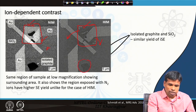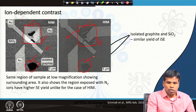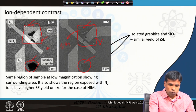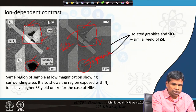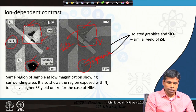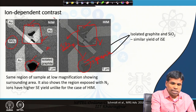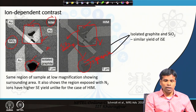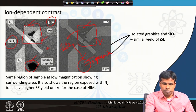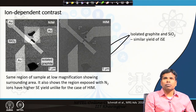The isolated graphite contrast for nitrogen ions is significantly different from that in the helium ion microscope. SiO2 contrast and graphite contrast are significantly different in nitrogen ion microscopy, which is not observed with helium ion microscopy. This indicates that by changing the ion, in some cases we can see a drastic difference in contrast or ion-induced secondary electron yield, helping us distinguish the presence of different materials — which is not possible with a scanning electron microscope.